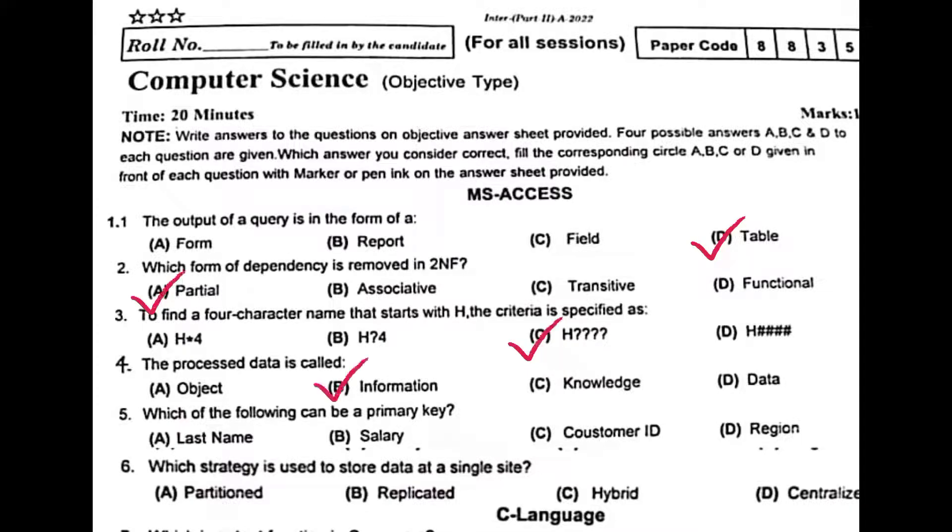The processed data is called information. Which of the following can be a primary key? Customer ID. Which strategy is used to store data at a single site? Centralized.